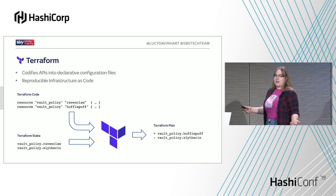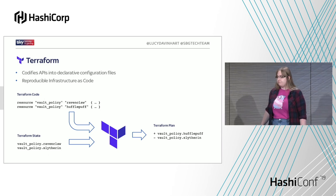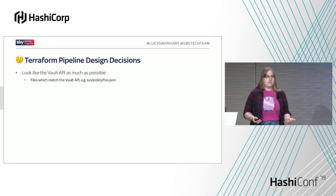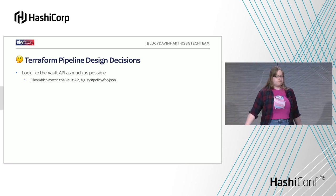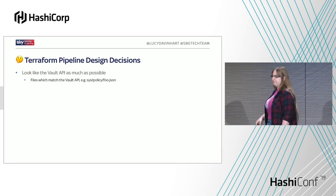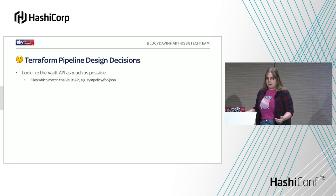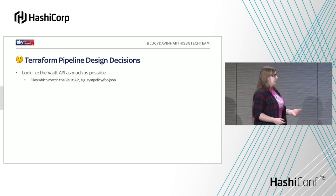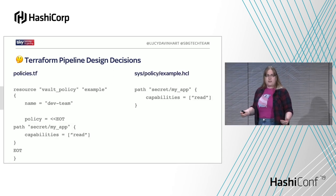We've been using Terraform for a while to manage all sorts of things, and we discovered it has a Vault provider — which means we can use it to configure Vault. But we didn't want to give our users a repository full of raw Terraform code, because that would mean they'd have to learn how Terraform works at the same time as learning how Vault works. Instead, we wanted something which resembled the Vault API on disk. Not abstracting stuff away means our users get a chance to learn a little bit more about how Vault works, which reduces their learning curve.